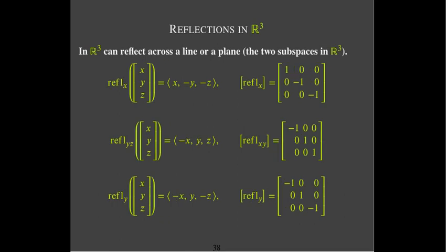Reflections follow a similar pattern. If you reflect in the x-axis in R3, the x component doesn't change, but both y and z change sign. If you reflect in one of the coordinate planes — say the yz coordinate plane — the yz components are not going to change, so y and z will not change; it's only x that will change sign. That's true for all reflections in the coordinate axes and coordinate planes in R3.